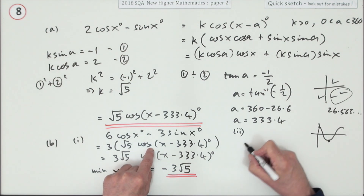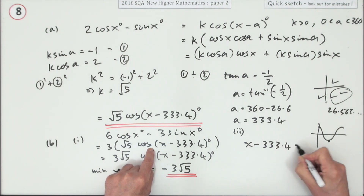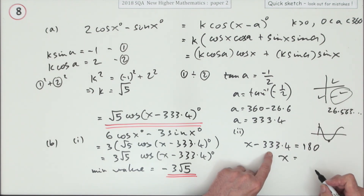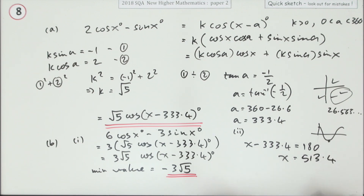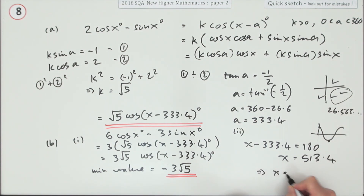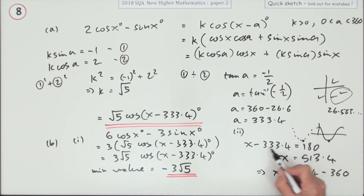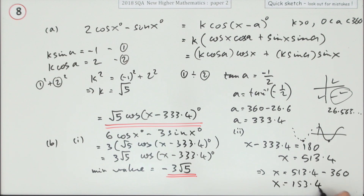Part two also asks when that minimum value occurs. On a cosine, the minimum occurs at 180°, so x − 333.4 = 180°, giving x = 513.4°. That's outside the 0 to 360° window, so subtract 360° to bring it back: x = 513.4 − 360 = 153.4. Strictly speaking the degree sign is already implied from the working.